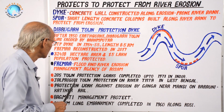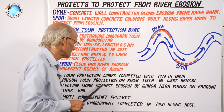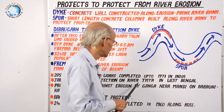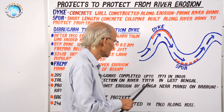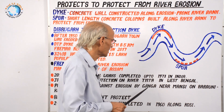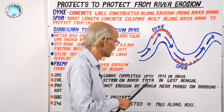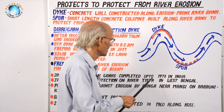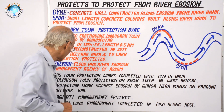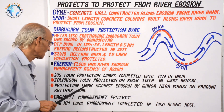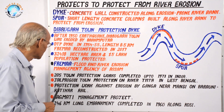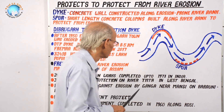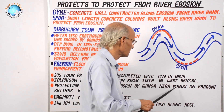Jalpaiguri town is located in West Bengal along the bank of river Teesta. Teesta also causes flood and lateral erosion, and so the Jalpaiguri town protection work has been completed on this river.